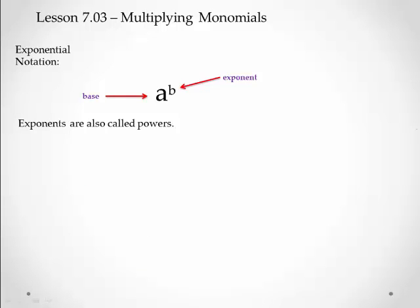Exponents are also called powers, so those two words are interchangeable, and they represent repeated multiplication, which we have discussed in previous lessons. For example, 3 to the 4th, 2 to the 6th, or 5 to the 3rd.